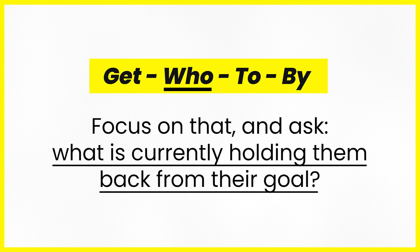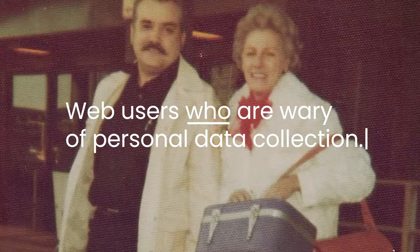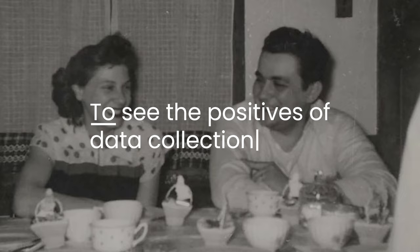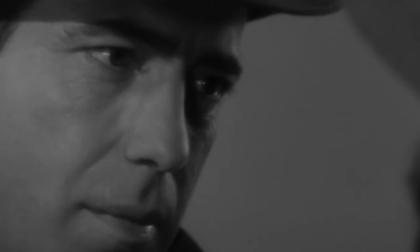It's: Get web users. The Who part signals the consumer problem — focus on that and ask what is currently holding them back from their goal. In the case of Google, it's web users who are wary of personal data collection. The To part of the statement talks to the consumer goal: what is the desired response from the target audience once their problem is solved? For this ad, it's to see the positives of data collection. And finally, the By statement is the one message that we can tell consumers to get them closer to their goal — what can we say or do to make them see this from a new angle or perspective? It answers the how of our To statement by showing that the more Google knows about you, the more it can enrich your life.